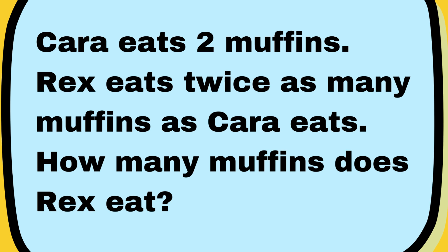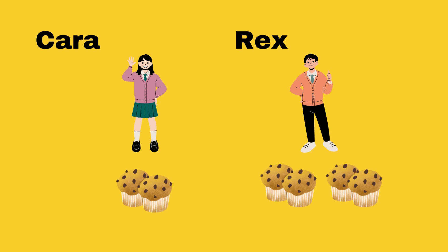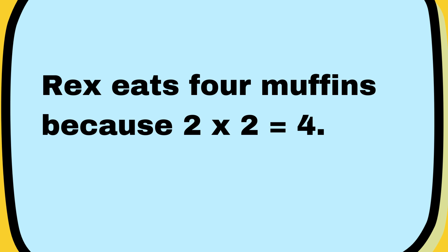Kara eats two muffins. Rex eats twice as many muffins as Kara eats. How many muffins does Rex eat? Rex eats four muffins because two times two equals four.